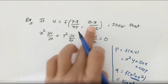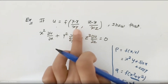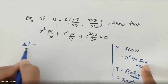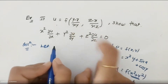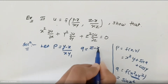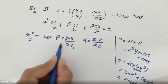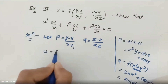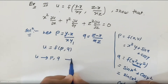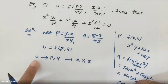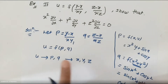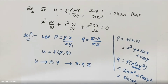Similarly here, which function are we dealing with? We have (y − x)/xy and (z − x)/xz. The first is a function of x and y, and the second is a function of x and z. To understand this properly, let us define p = (y − x)/xy and q = (z − x)/xz. Then u = f(p, q), meaning u is a function of p and q, and p and q are functions of x, y, z.